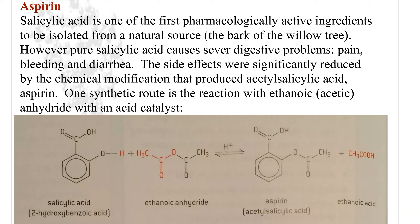Salicylic acid is one of the first active ingredients that was isolated from a natural source, which was the bark of a willow tree. But salicylic acid unfortunately causes severe digestive problems — it gives the same effects as aspirin but has way worse side effects. So through the chemical modification of salicylic acid, we can actually produce aspirin, which is acetylsalicylic acid.